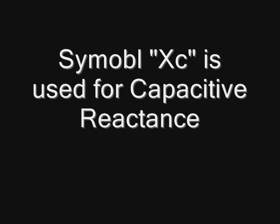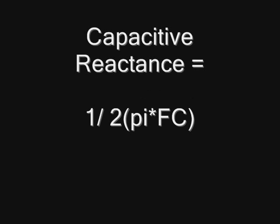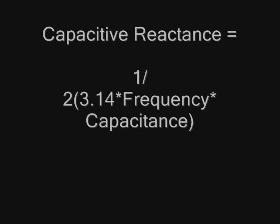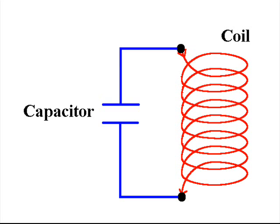The symbol Xc is used for capacitive reactance. The formula for capacitive reactance is 1 divided by 2 pi times the frequency times the capacitance — that is, 1 divided by 2 times 3.14 times frequency times capacitance. A higher frequency or higher capacitance value will generate more capacitive reactance.